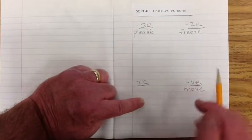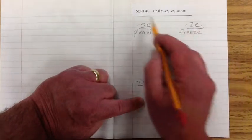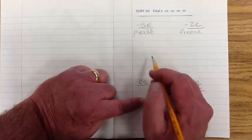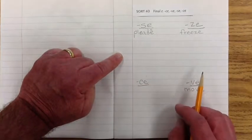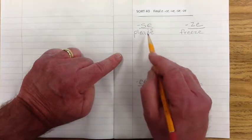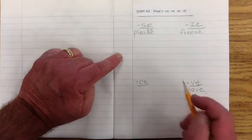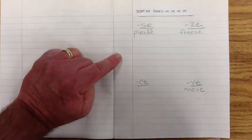Here we have freeze. Makes that Z sound. This is the what? This is the tricky one. When we have the E-A-S-E, it makes the... If you look closer, Mr. Power wrote a little Z-E. Makes the Z sound. Please. That's the tricky one. All right. Let's go to our last one.